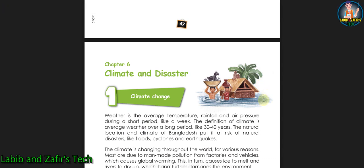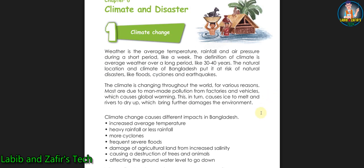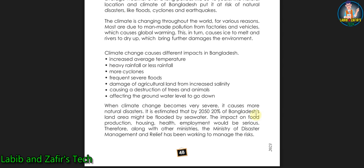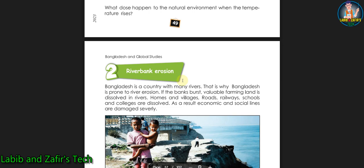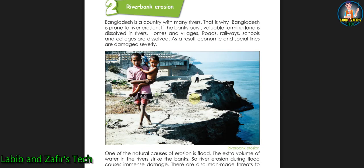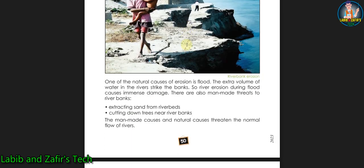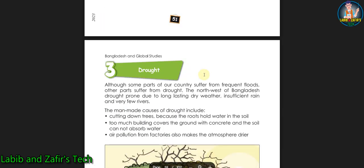In the first lesson, we'll be able to know what is climate change, what are the effects of climate change, and what are the causes of climate change. The different impacts of climate change are described. In the second lesson, we'll be able to know what is riverbank erosion, how riverbank erosion is caused, and what are the bad effects of riverbank erosion.